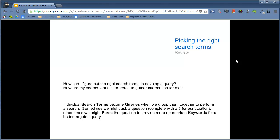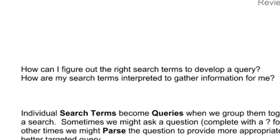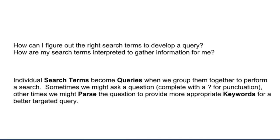If you can remember from our last class, we started by asking two questions. How can I figure out the right search terms to develop a query? And how are my search terms interpreted to gather information for me? These two questions led us to find out some interesting information. Individual search terms become queries when we group them together to perform a search. Sometimes those queries might take the form of a question complete with punctuation, and other times we might parse those questions to provide more appropriate keywords for a better targeted query. Just remember, individual words are search terms. Put them together to create queries.